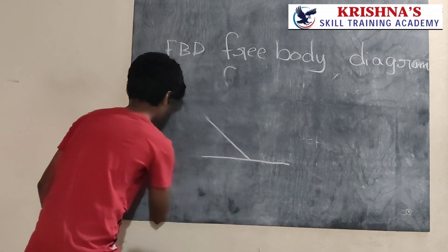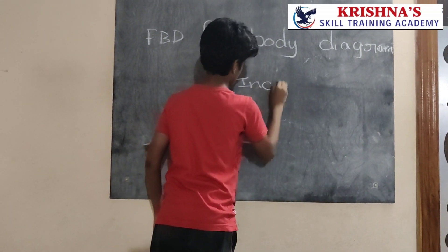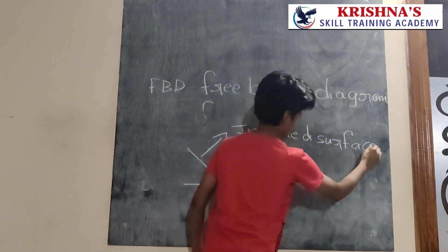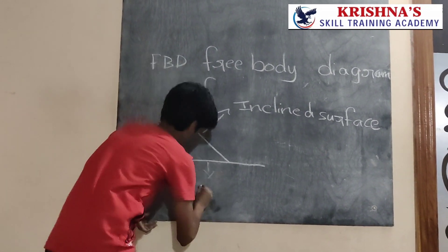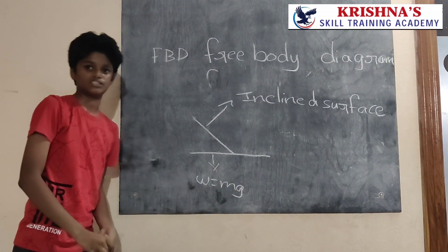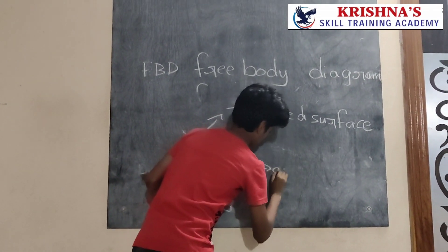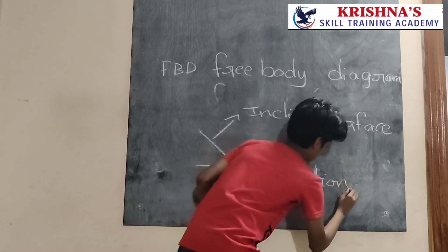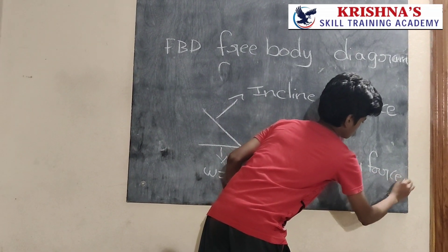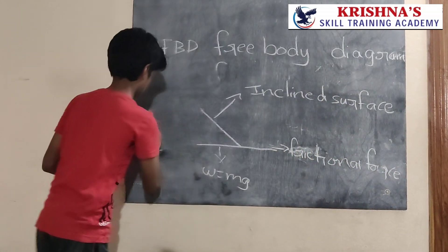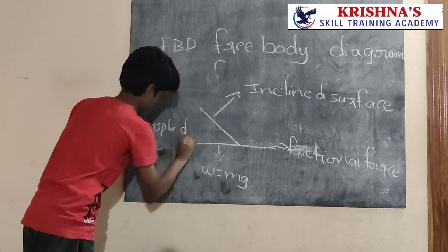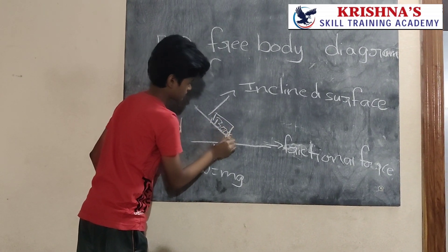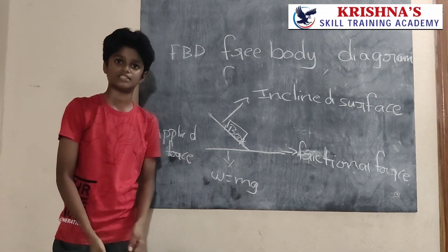This is an inclined surface. Gravitational force always acts downwards. The formula of the gravitational force is W is equal to mg. The purpose of a free body diagram is to reduce complexity for easy analysis.